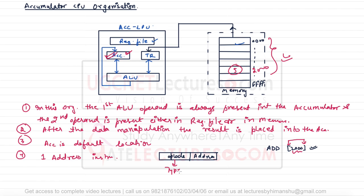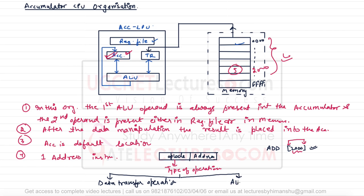The opcode specifies the type of operation. There are two types: data transfer operations and ALU operations. Data transfer operations include load and store. A load operation is a memory read operation, and a store operation is a memory write operation. In the case of a load operation, the source is memory and the destination is the accumulator.